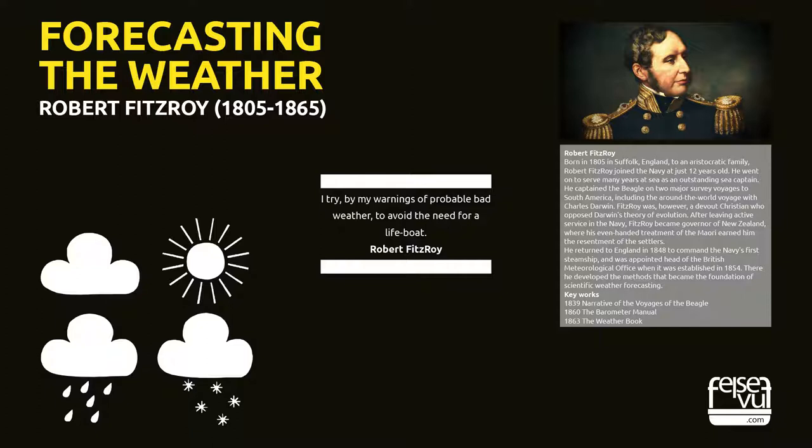Robert Fitzroy. Born in 1805 in Suffolk, England, to an aristocratic family, Robert Fitzroy joined the Navy at just 12 years old. He went on to serve many years at sea as an outstanding sea captain, captaining the Beagle on two major survey voyages to South America, including the around-the-world voyage with Charles Darwin. Fitzroy was, however, a devout Christian who opposed Darwin's theory of evolution. After leaving active service, Fitzroy became Governor of New Zealand, where his even-handed treatment of the Maori earned him the resentment of the settlers. He returned to England in 1848 to command the Navy's first steamship, and was appointed head of the British Meteorological Office when it was established in 1854, where he developed the methods that became the foundation of scientific weather forecasting. Key works: 1839, Narrative of the Voyages of the Beagle; 1860, The Barometer Manual; 1863, The Weather Book.